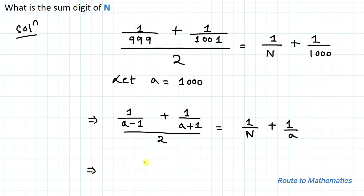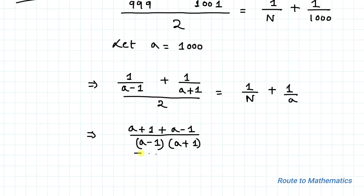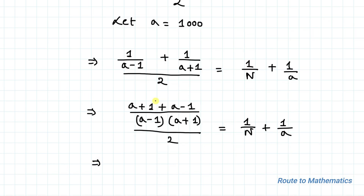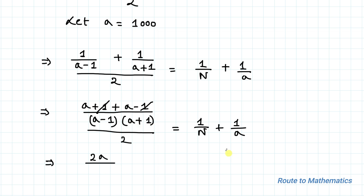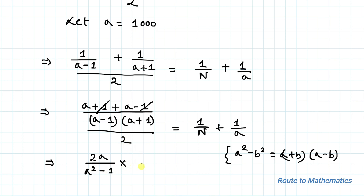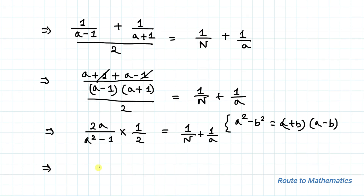Taking the LCM on the left side, we get (a+1 + a−1) / ((a−1)(a+1)) / 2 = 1/n + 1/a. The +1 and −1 cancel, giving 2a / ((a²−1) · 2) = 1/n + 1/a. The 2s cancel, leaving a / (a²−1) = 1/n + 1/a.